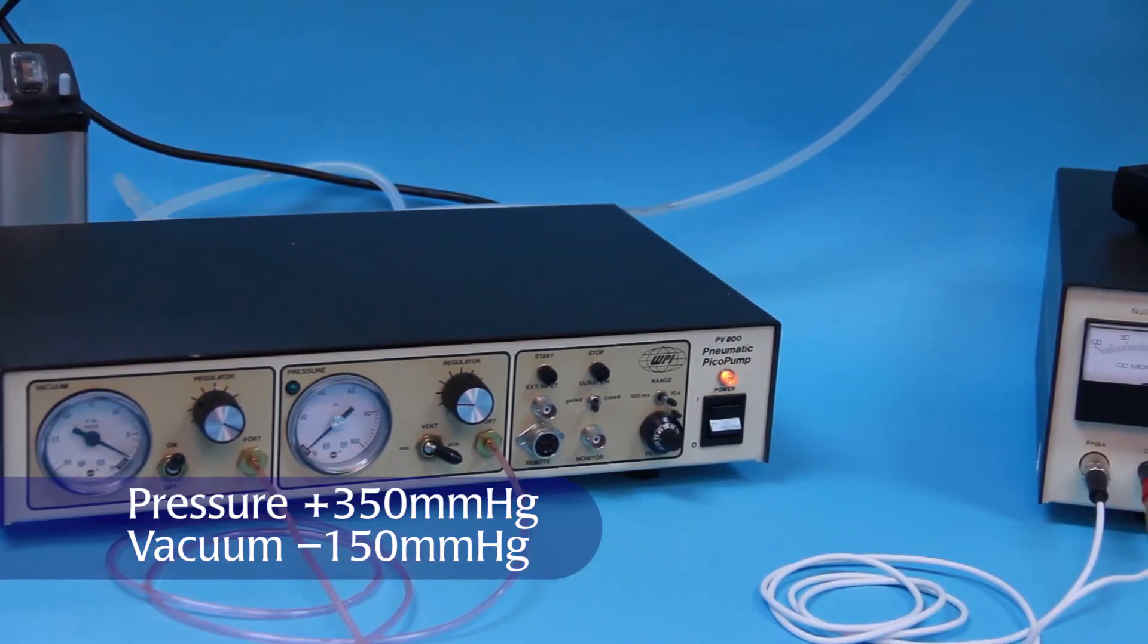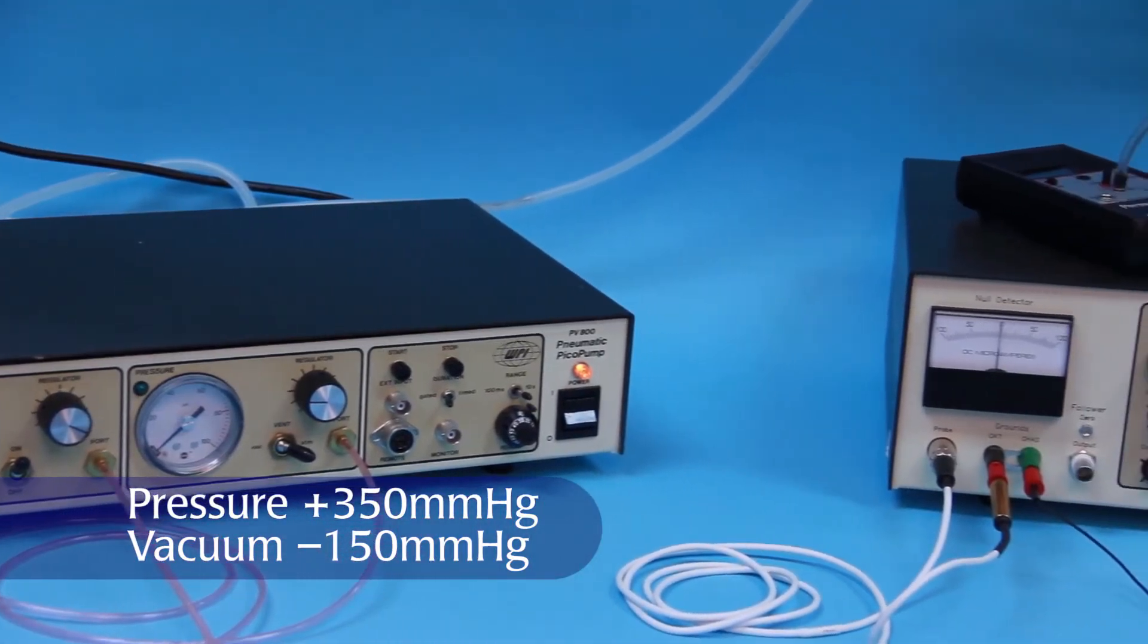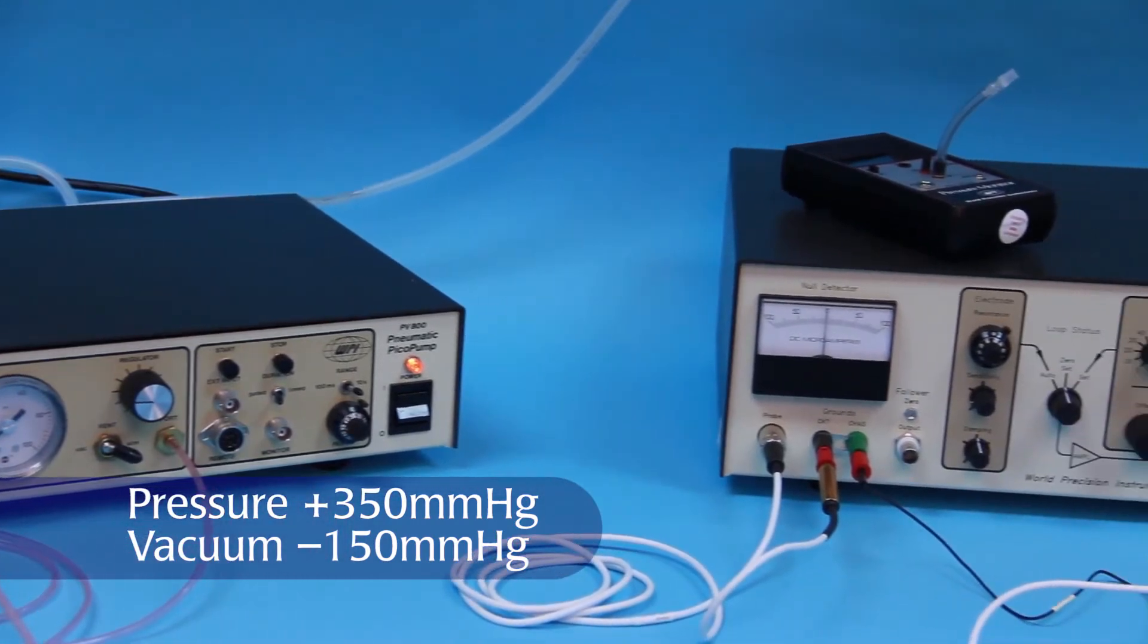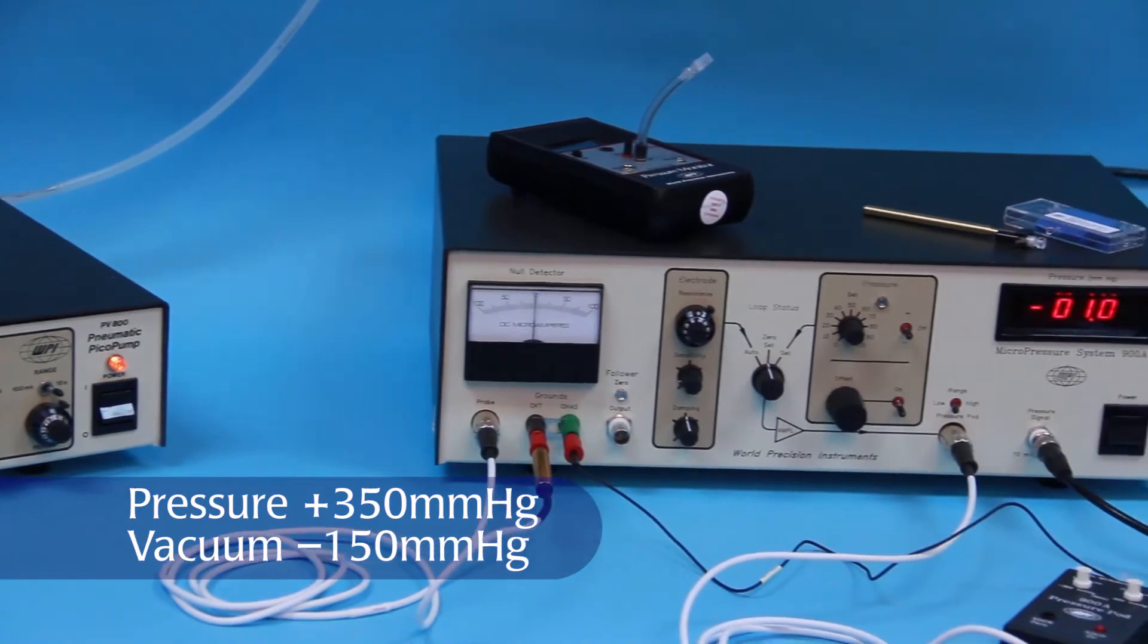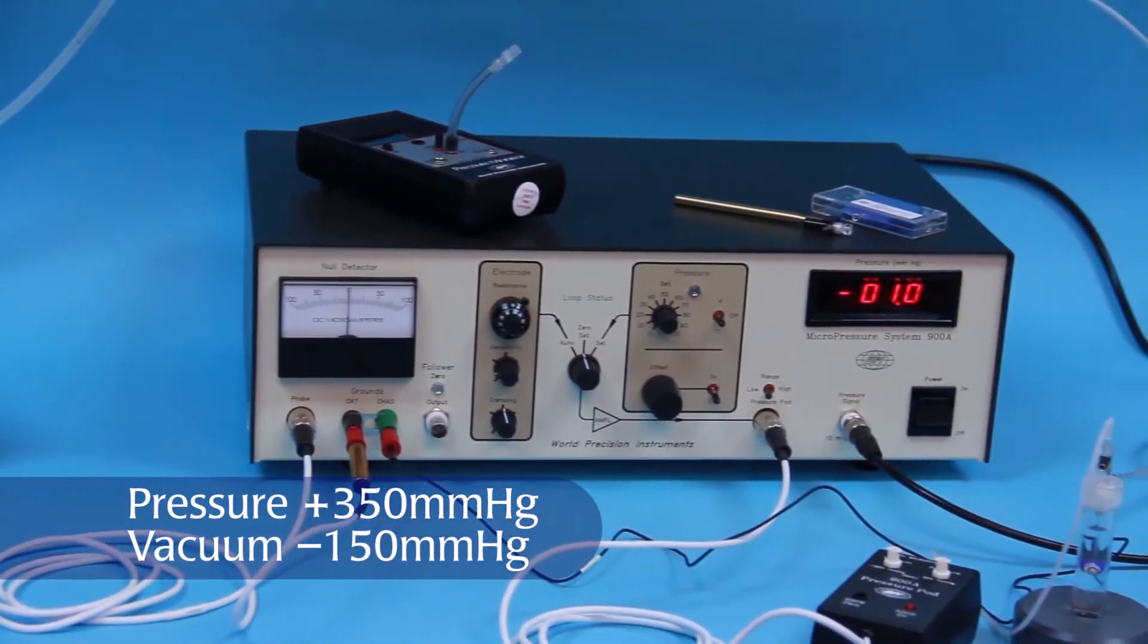The sources of pressure and vacuum for the 900A pressure pod should be regulated to approximately plus 350 millimeters of mercury for the pressure and minus 150 millimeters of mercury for the vacuum.